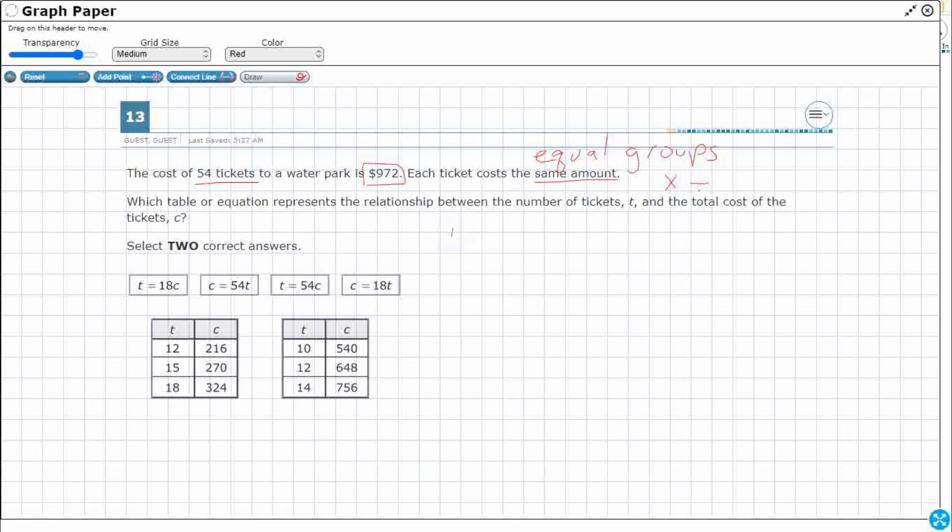54 tickets equals $972. Let's do 54T equals $972. How do I figure out how much one ticket costs? Well, what if we just divide both sides by 54? That's going to cancel itself out. So T, one ticket, is going to be whatever 972 divided by 54 is.